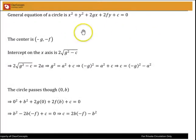First, we start with the general equation of a circle, x squared plus y squared plus 2gx plus 2fy plus c equal to 0. We know that the center here is minus g comma minus f. We know that the intercept on the x-axis of this circle is 2 times the square root of g squared minus c.